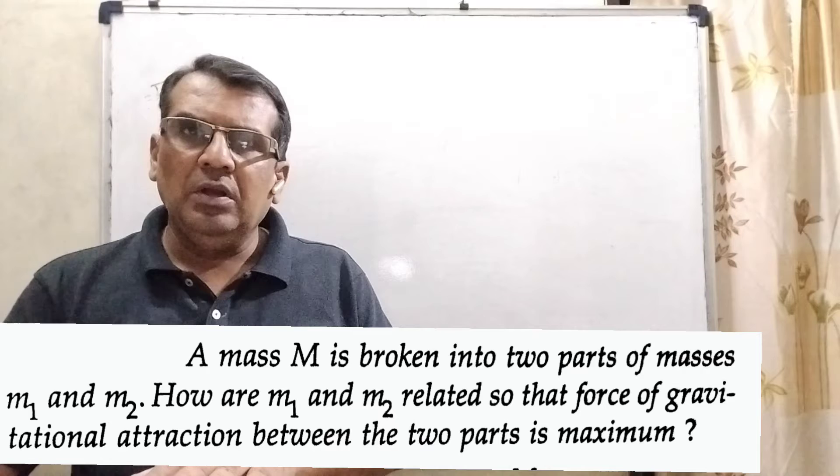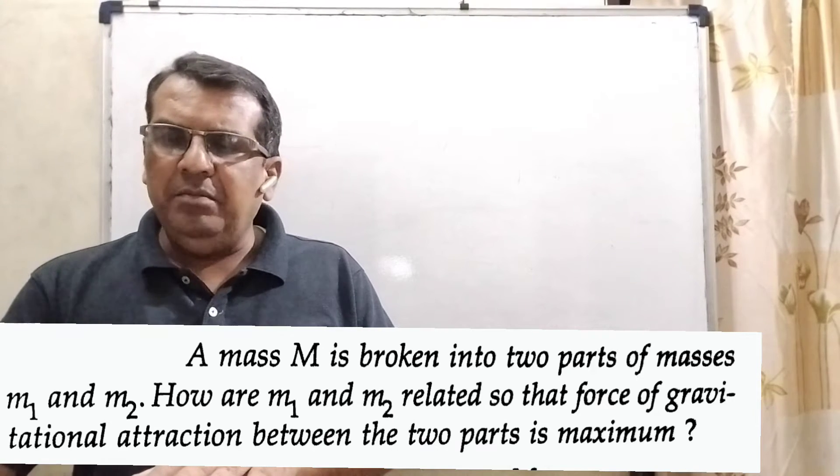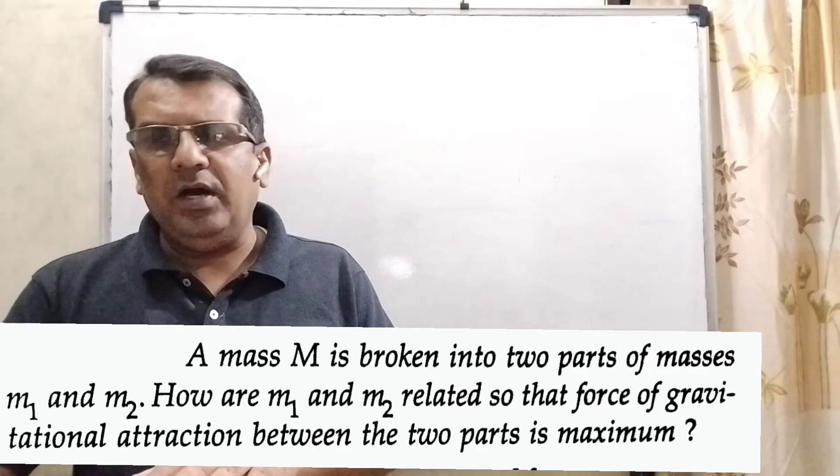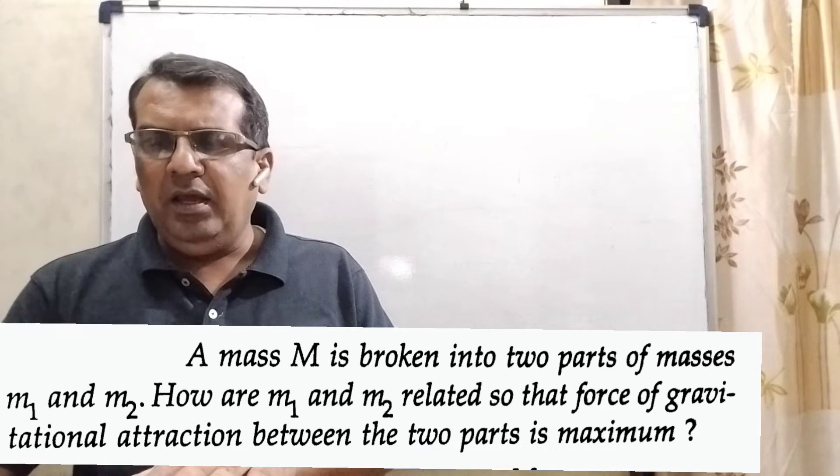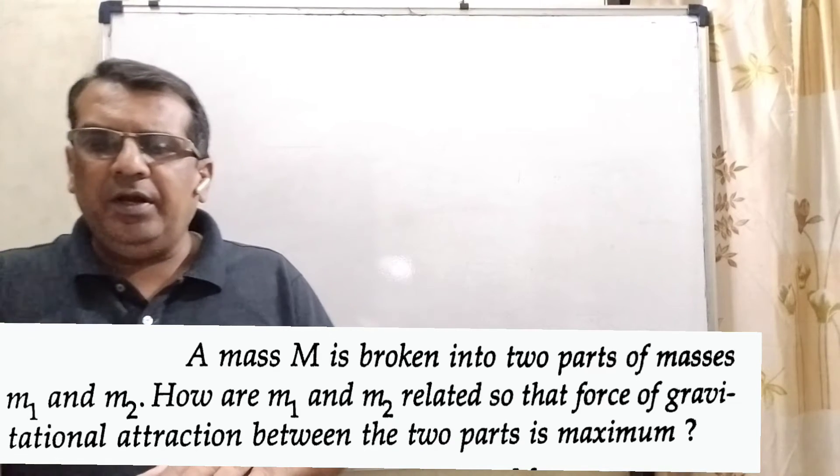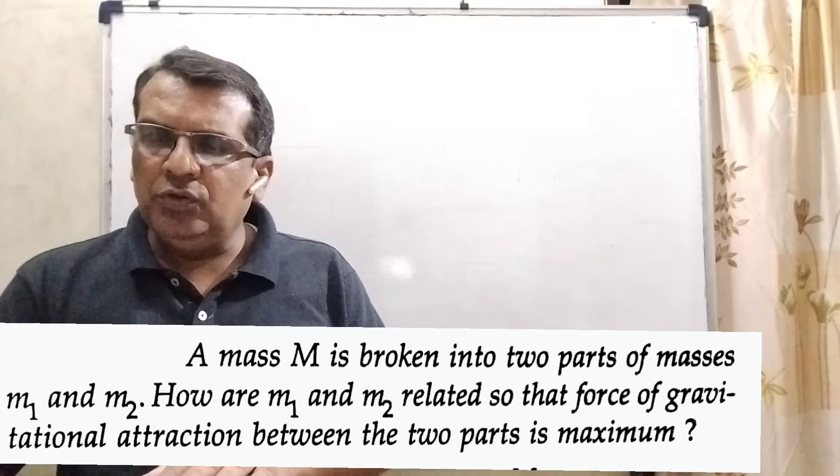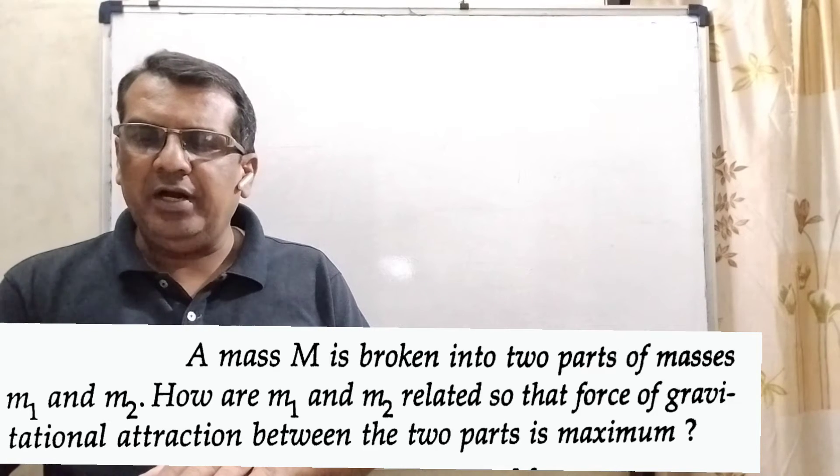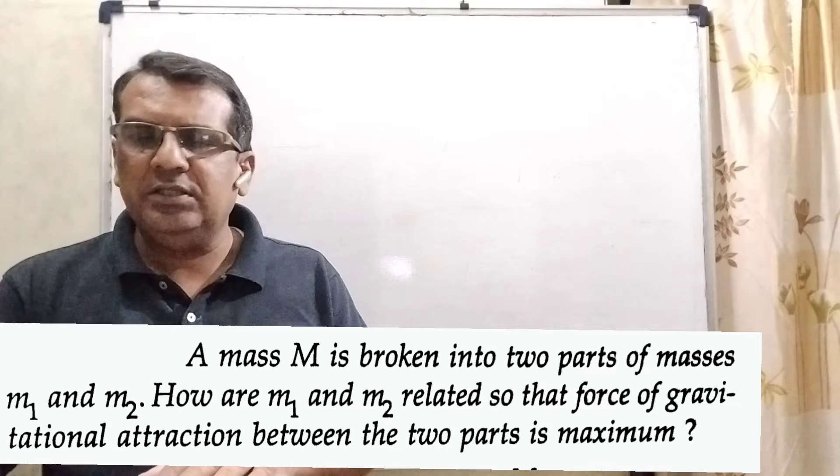Now here is the question. A mass capital M is broken into two parts of masses M1 and M2. How are M1 and M2 related so that force of gravitational attraction between the two parts is maximum?